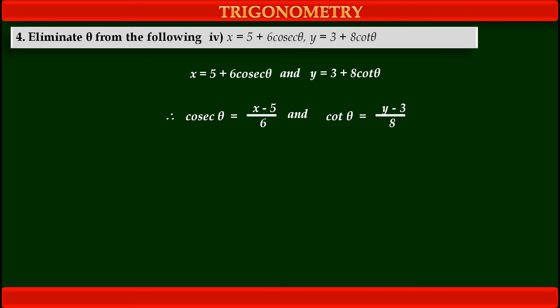Now we have two trigonometric functions cosec theta and cot theta in terms of x and y. And we know the identity related to cosec theta and cot theta: cosec squared theta minus cot squared theta equals 1. This is a very important identity in trigonometry.